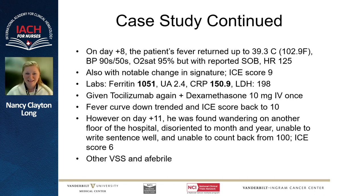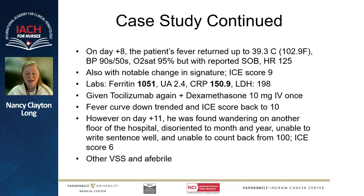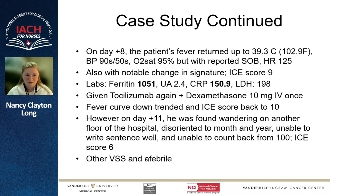Back to our patient: on day eight, fever was still present, blood pressure still low, but adequate oxygen saturation — though he was short of breath and still tachycardic. We noticed a change in his handwriting with his signature, giving him an ICE score of nine. He was given tocilizumab again for recurrent fever and dexamethasone 10 mg once. The fever curve downtrended and the ICE score returned to 10. However, on day 11, we found him wandering in a different part of the hospital — disoriented, unable to read a sentence, and couldn't count backwards from 100. His ICE score was six — this also illustrates the importance of bed alarms. He was given dexamethasone as grade two ICANS. His ICE score improved within four hours and was back to 10 by day 12. The patient will typically have no memory of this episode. Impressively, he was discharged on day plus 14.